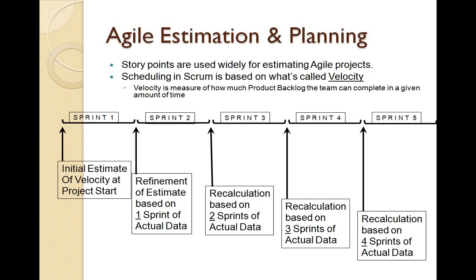The scheduling in Scrum is typically based on something called velocity, which is a measure of how much work can be done in a given amount of time. We use this to try to rectify our estimation errors over a period of time.